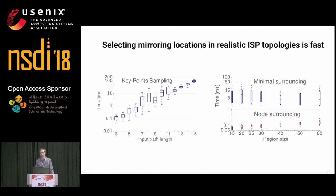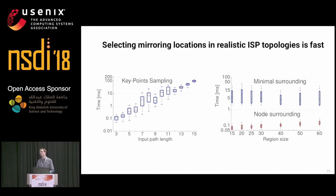Can this work in practice? The placement algorithms are quite fast. We ran benchmarks on all Rocketfuel topologies as well as most Zoo topologies — networks with a couple of hundred nodes or up to a couple of thousand links. For realistic inputs, paths of about 9 to 10 hops, it takes about 10 milliseconds to run the keyport sampling algorithm to select mirroring locations. The surrounding algorithm is much faster and does not depend on the input size — it's mostly driven by the layout of the topologies.